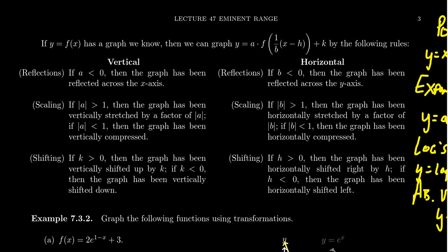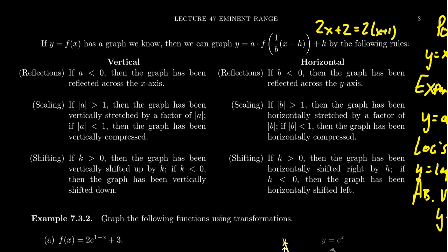To make sure the horizontal zone acts correctly with the right order of operations, you want it to be factored. For example, if you had something like 2x plus 2 inside the function, you would factor this as 2 times (x plus 1). This tells us we're doing a horizontal compression by a factor of 2 and then shifting things to the left by 1. Make sure it's factored in order to get the correct transformations — the horizontal zone should always be factored.